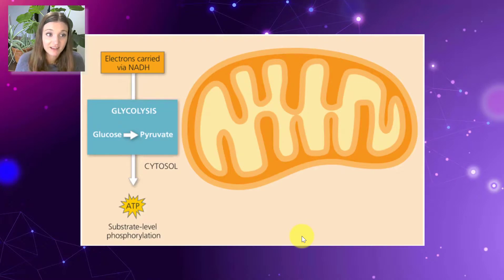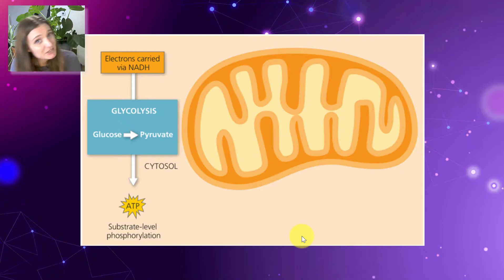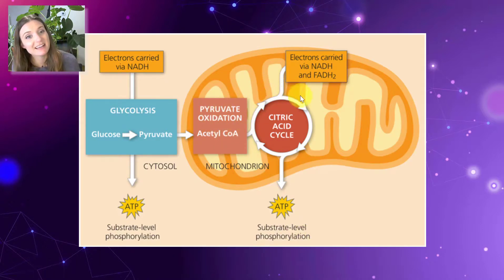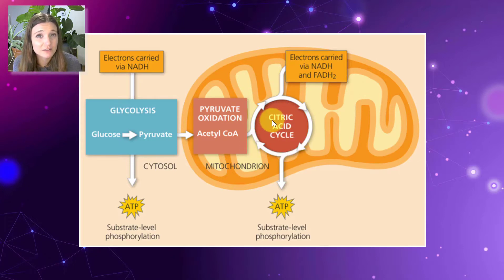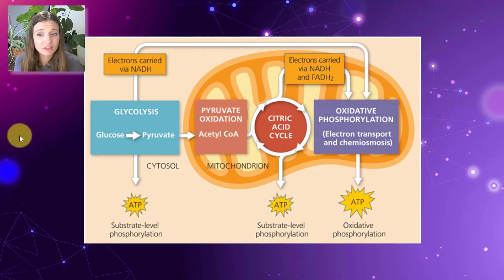Overview: glycolysis — glucose gets broken down into pyruvate. We make a little ATP and transfer some electrons to NAD+ to make NADH. This happens in the cytoplasm. Pyruvate then gets transferred into the mitochondria to form acetyl-CoA in the pyruvate oxidation step. Acetyl-CoA enters the citric acid cycle, where we complete the oxidation of glucose and strip all remaining electrons off. Then the electrons carried by NADH and FADH2 make their way to the electron transport chain, which provides the energy to make ATP. In our next video, we're going to dive into what's happening in each of those steps of cellular respiration.